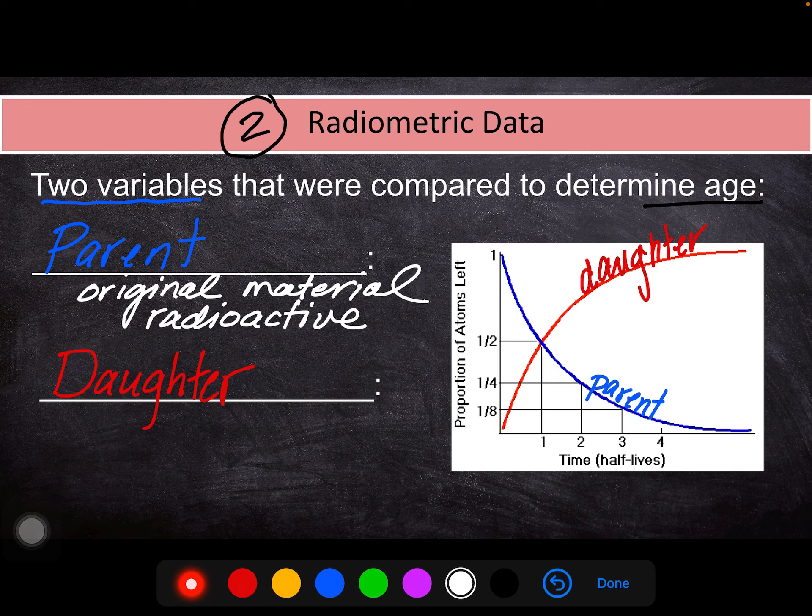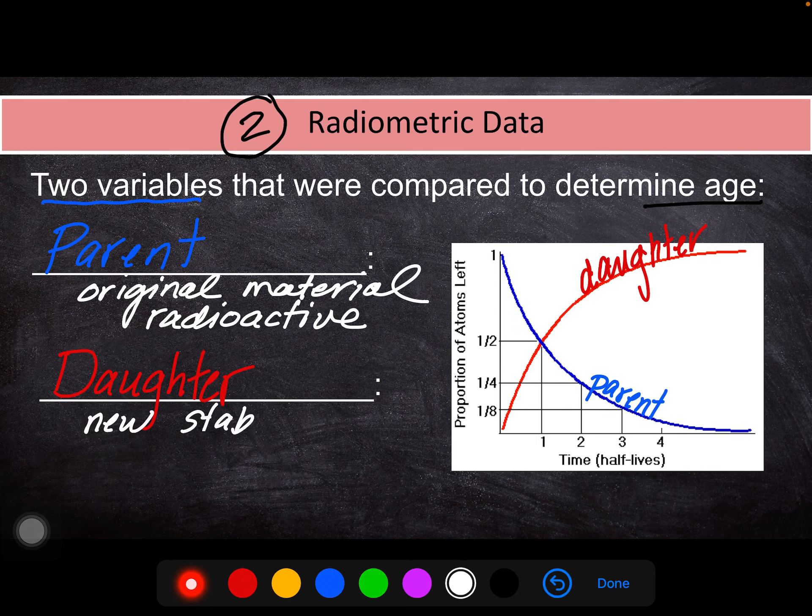And a lot of times we're worried when we hear that term, like radioactive, dangerous. Some are, but in this case of the rock, it's not. It's a harmless thing that happens just as the atom transforms into its different version. And that different version is the daughter. That's the new stable material that forms over time as the parent decays into the daughter.